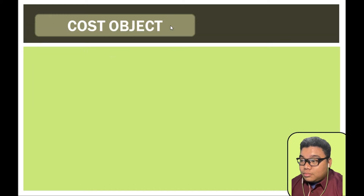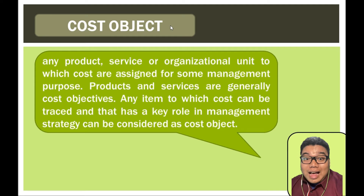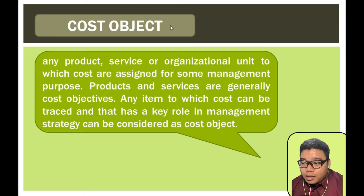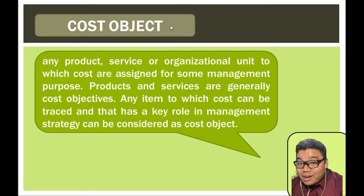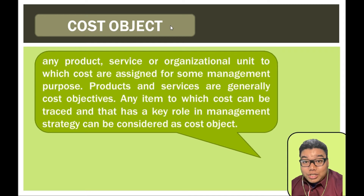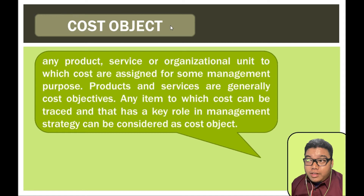When we say cost object, this is the item with which the cost is pertaining to — the product, service, or organizational unit to which costs are assigned for some management purpose. It is the reason why we incurred that cost. For example, raw materials for a product: the cost object is the product. Products and services are generally cost objectives. Any item to which cost can be traced and that has a key role in management strategy can be a cost object — for example, each machine can be a cost object for repairs and maintenance tracking.